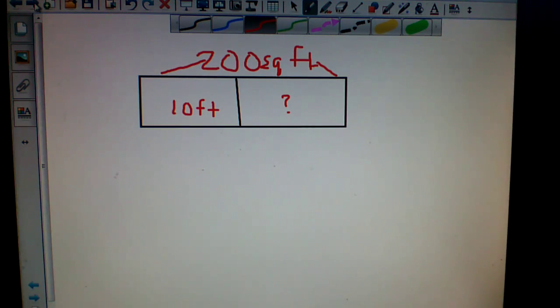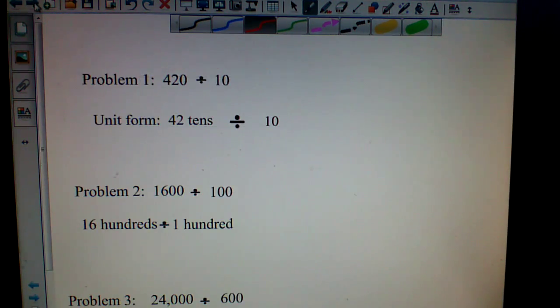Okay, so let's go on. So here are our next couple of problems. 420 divided by 10 is the same as saying 42 tens divided by 10, so you would take out the 10 basically and end up with 42. It's pretty easy, right?